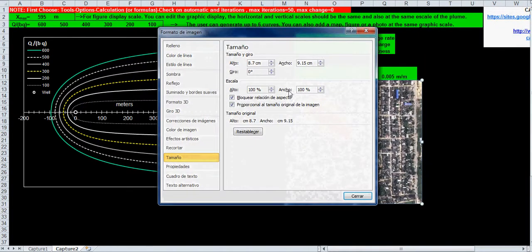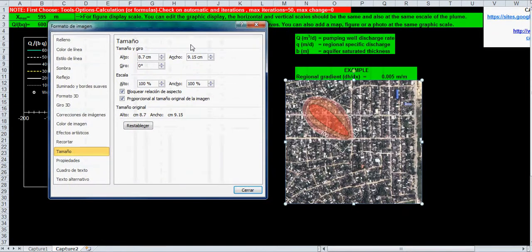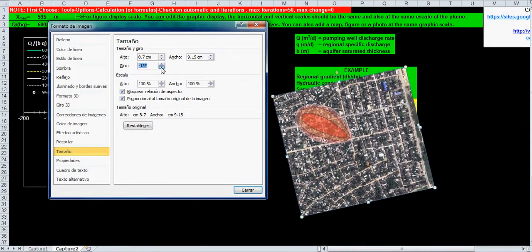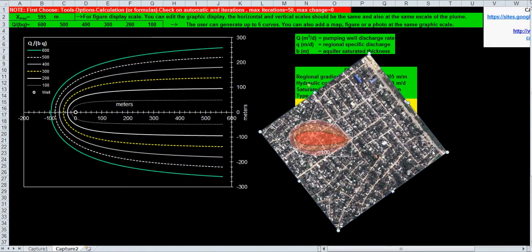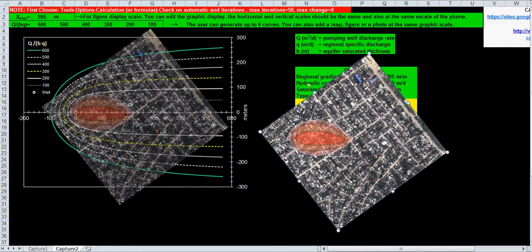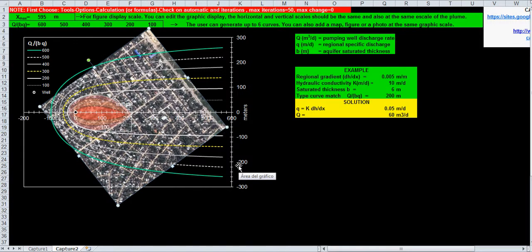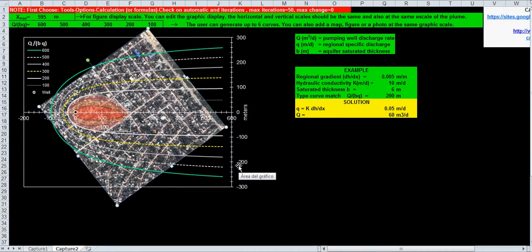So, you can rotate here your plume. Let's see. Okay. Here we are. And this is exactly the same procedure until you fit your Capture type curve.